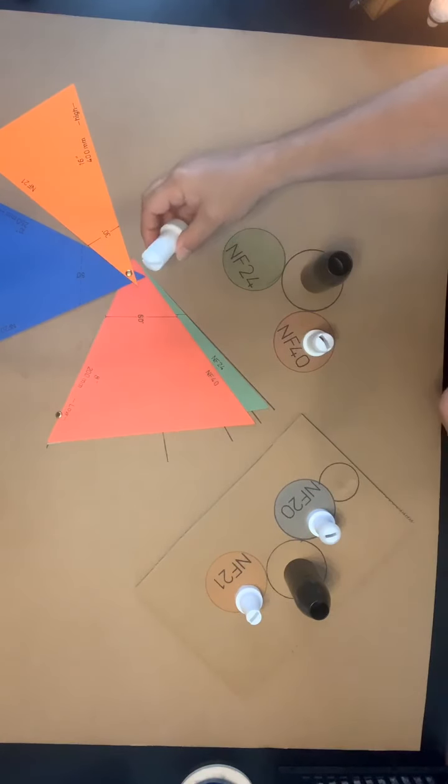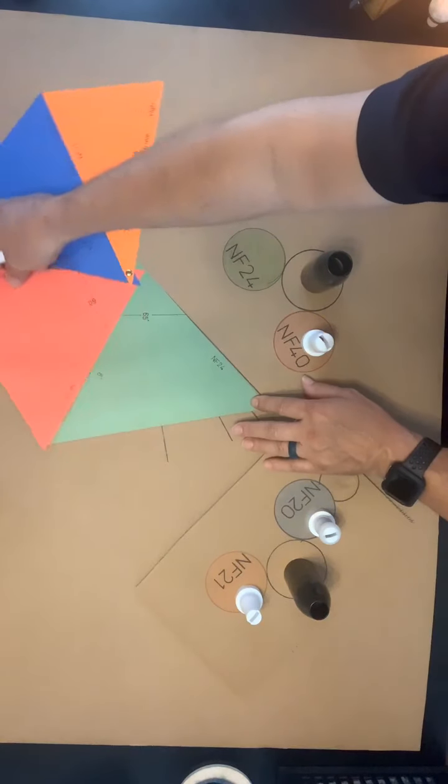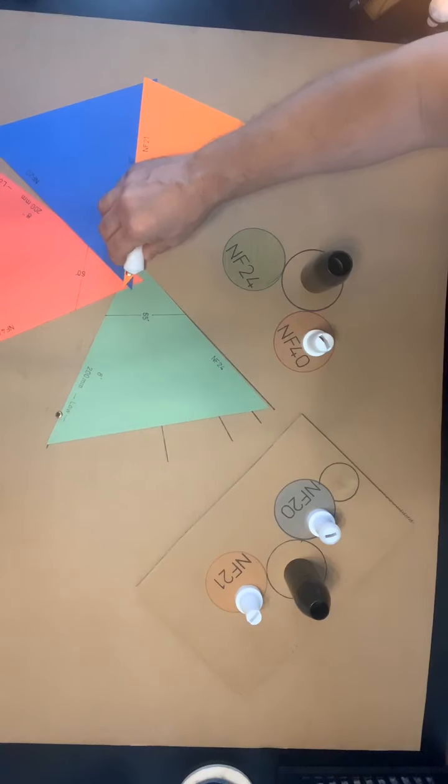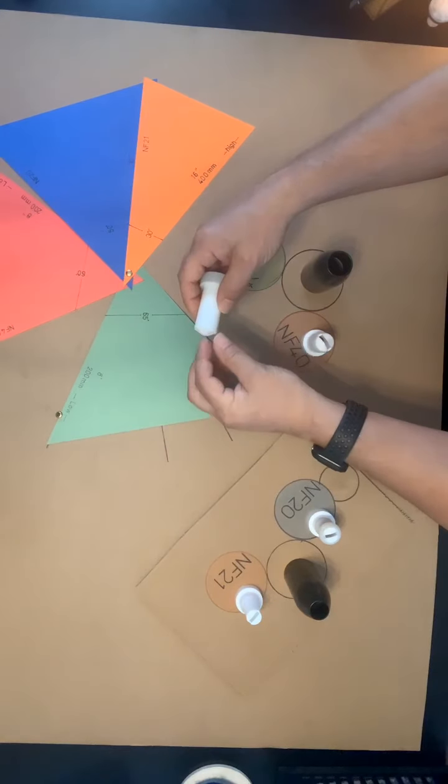Moving down to the NF-24, this one here is just a little bit larger. So this one's going to be a 65 degree angle. So it's going to be good for that 8 to 10 inch target distance. And again, it's a low velocity nozzle.